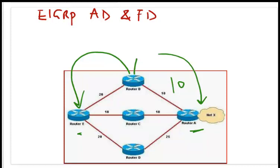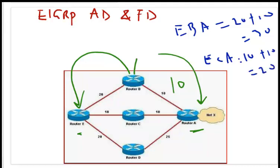How do we determine the best route or best path towards router A? That is where we calculate the cost or path cost through these routers. From router E-B to A, we calculate we have 20 plus 10, which is equal to 30. From E-C-A we have 10 plus 10 which is equal to 20. From E-D-A we have 20 plus 25 which is equal to 45.